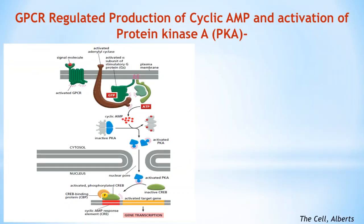GPCR-regulated production of cyclic AMP: cyclic AMP is synthesized from cytosolic ATP by a plasma membrane-bound enzyme called adenylyl cyclase. It is rapidly and continuously destroyed by cyclic AMP phosphodiesterase. Cyclic AMP concentration can be increased by increasing the activity of adenylyl cyclase against a steady background of phosphodiesterase activity. Adenylyl cyclase is a large multi-pass transmembrane protein with its catalytic domain on the cytosolic side of the plasma membrane.